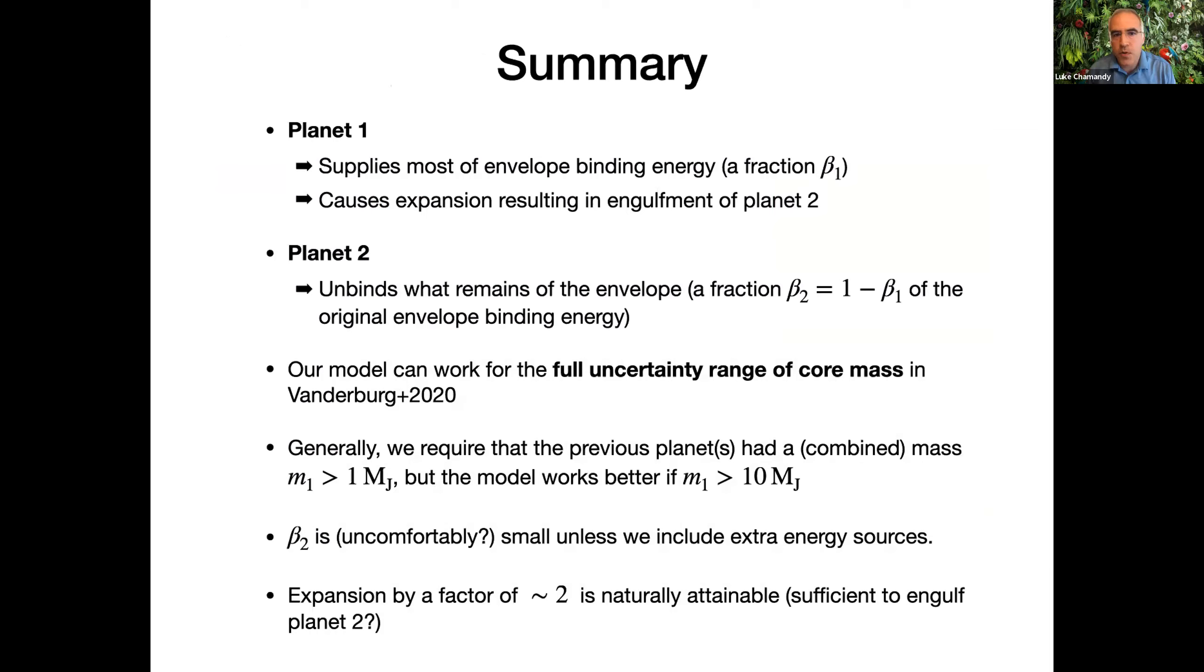So to summarize, planet 1 supplies most of the envelope binding energy in our scenario, the fraction beta 1. It causes an expansion resulting in the engulfment of planet 2. Planet 2 then unbinds what remains of the envelope, a fraction beta 2, which is 1 minus beta 1, of the original envelope binding energy. Our model can work for the full uncertainty range of core mass in the Vandenberg paper. Generally, we require that the previous planets had a combined mass greater than one Jupiter mass, but the model does work better if we're talking about planets or brown dwarfs greater than 10 Jupiter masses. Is beta 2 uncomfortably small? If we don't include extra energy sources, that's something we're still thinking about. But an expansion by a factor of 2 seems naturally attainable.